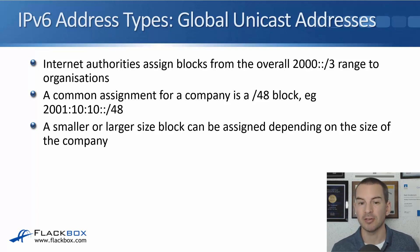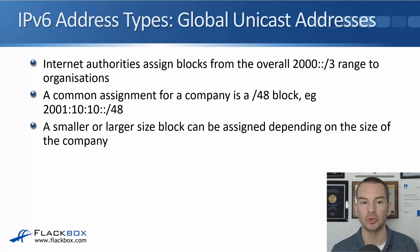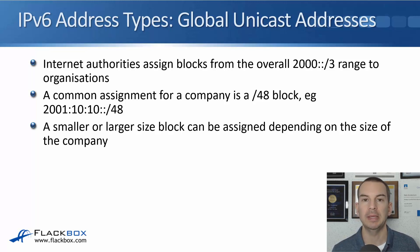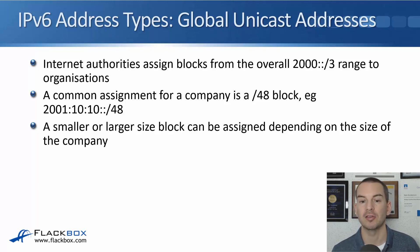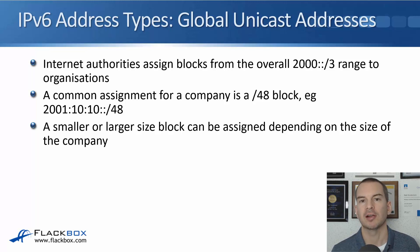A common assignment for a company is a /48 block — for example, 2001:10:10::/48. A company applies through a service provider for a block of IP addresses and is given that. Normally it will be a /48, but a smaller or larger size block can be assigned depending on the size of the company. A larger company can get more addresses; a smaller company will get fewer.